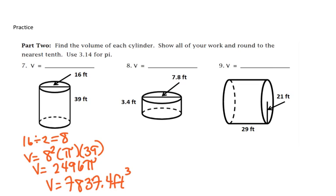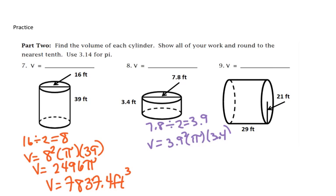In number 8, we want to take our diameter and divide by 2, so 7.8 divided by 2, which is 3.9. So we're going to do volume equals 3.9 squared times pi times 3.4, which is the height of our cylinder. We put in our calculator, we'll get 18.6 pi. When we multiply 18.6 by 3.14, we'll get 58.4 feet cubed.